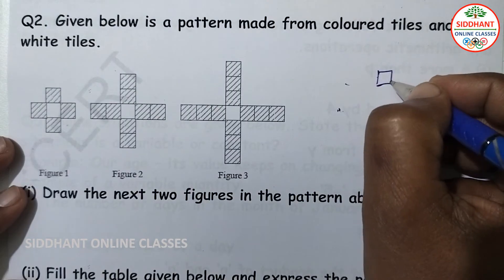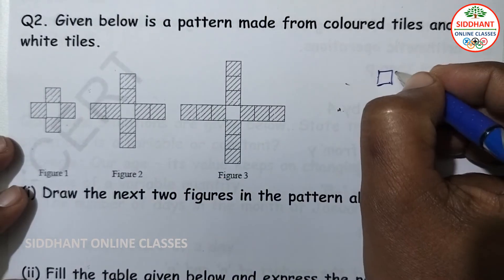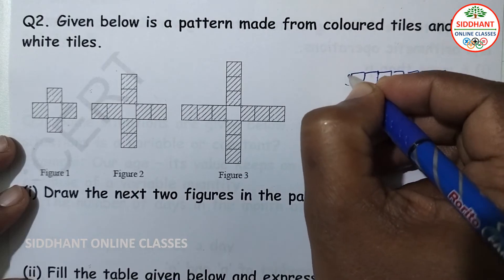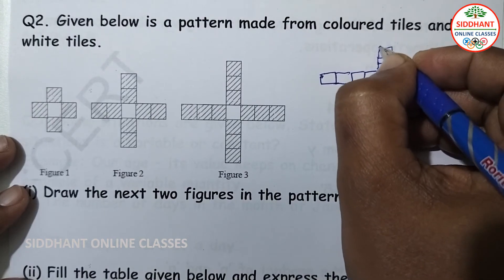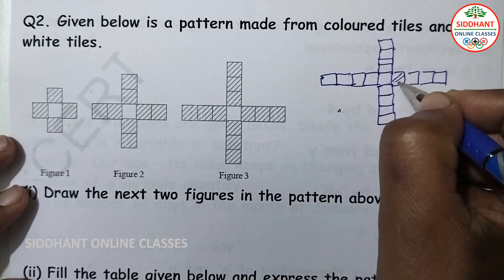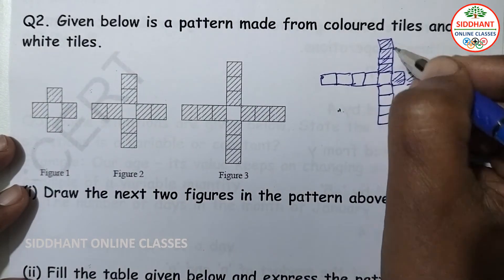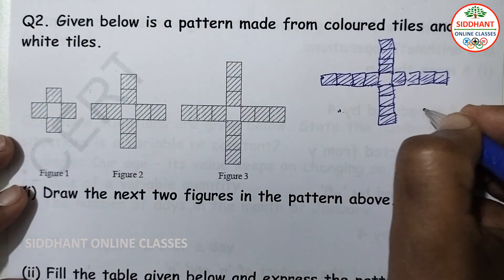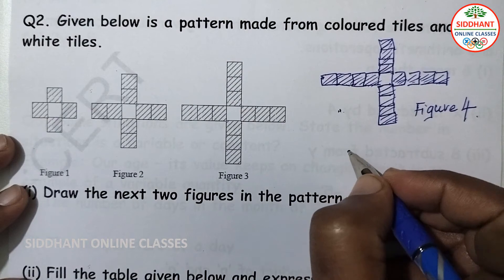For figure 4, the white tile is in the center. The colored tiles go: 1, 2, 3, 4 on each side — left side 1, 2, 3, 4; top 1, 2, 3, 4; and so on. This is the colored tiles arrangement for figure 4.